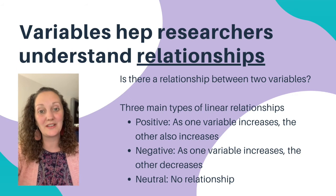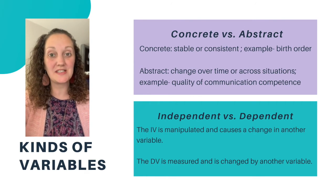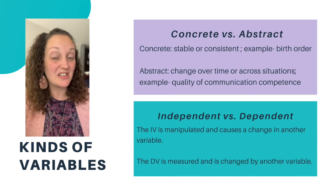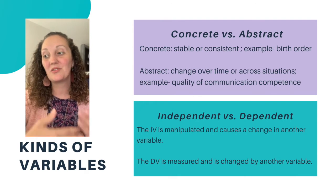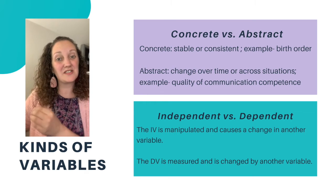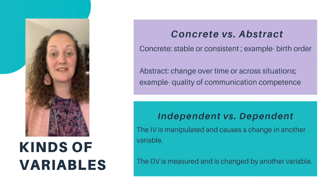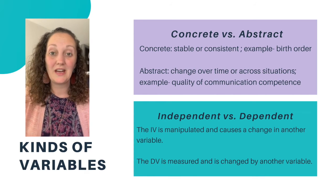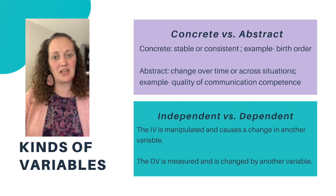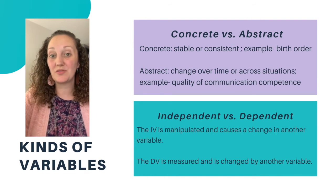A neutral relationship is where there's no relationship between the variables. In addition to variables helping researchers understand differences and relationships, there are also two different differentiations to talk about regarding variables. First, we have concrete variables versus abstract variables. Concrete variables are consistent — they're stable, they don't change over time. This would be something like birth order. No matter how many children your parents have, if you were the firstborn, you're always going to be the firstborn. Most variables are not concrete. Abstract variables can change over time or from situation to situation.